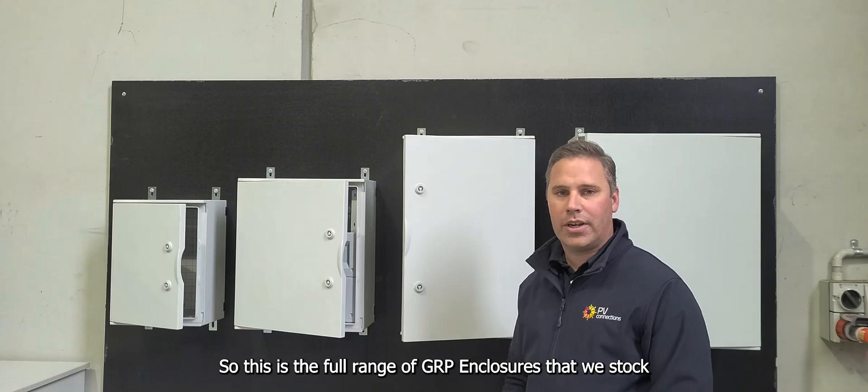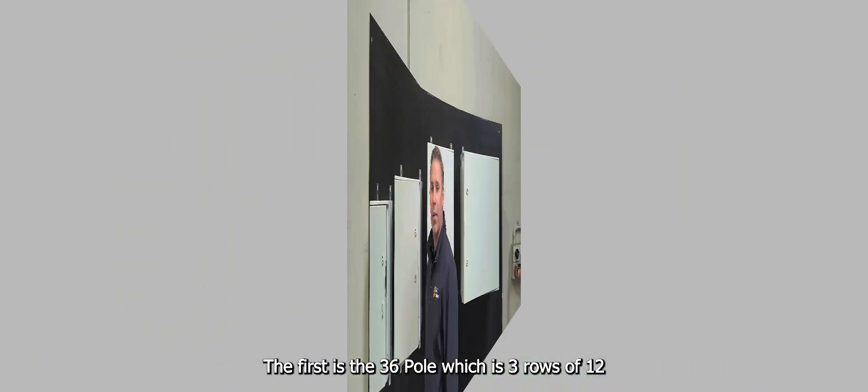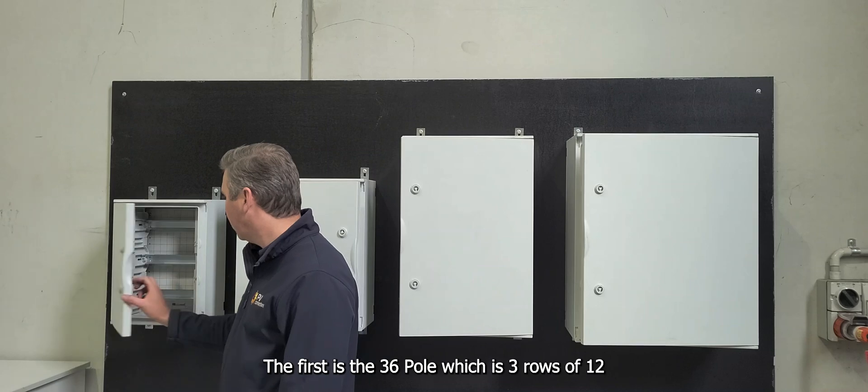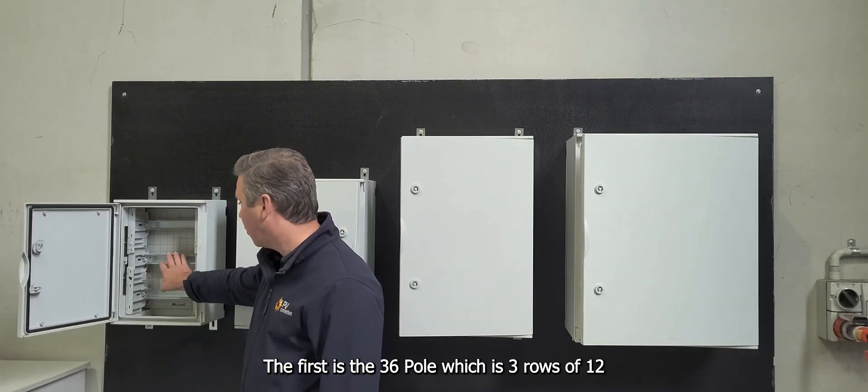So this is the full range of GRP enclosures that we stock. The first is the 36 pole which is three rows of 12.